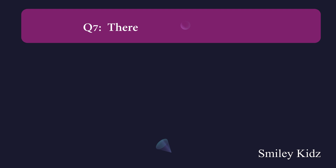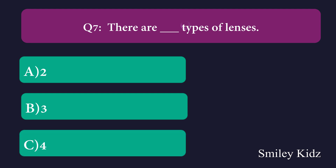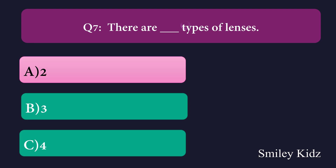Question number seven: There are dash types of lenses. Option A: 2, Option B: 3, Option C: 4. The right answer is two. There are two types of lenses.